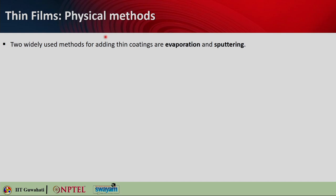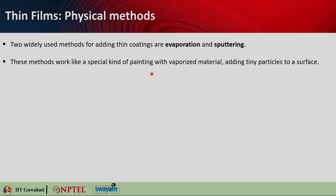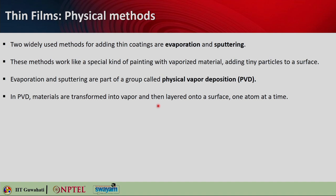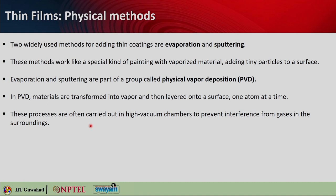When you talk about physical methods, there are two widely used methods for adding thin films: one is evaporation, another is sputtering. These methods work like a special kind of painting with vaporized material, adding tiny particles to a particular substrate — that will be the surface that you will be coating with the thin material. Evaporation and sputtering are part of a group called physical vapor deposition or PVD. In PVD, the materials are transformed into vapor and then layered onto a surface one atom at a time. These processes are often carried out in high vacuum chambers that prevent interference from gases in the surroundings.